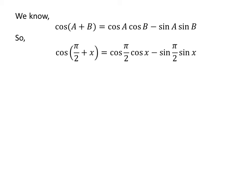Let us apply the above identity for cosine of half of pi plus x. Here, a is half of pi and b is x. So, cosine of half of pi plus x is equal to cosine of half of pi times cosine of x minus sine of half of pi times sine of x.